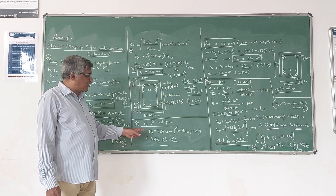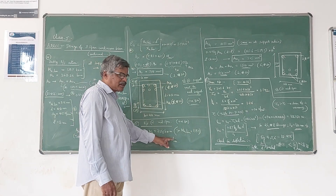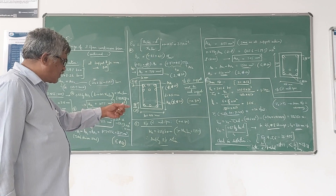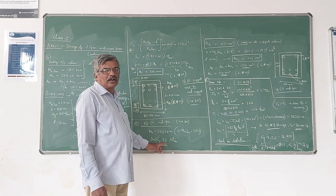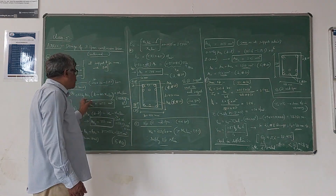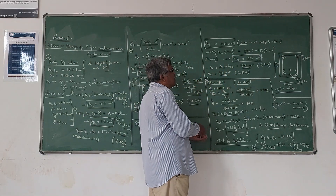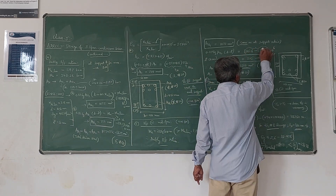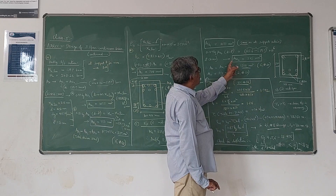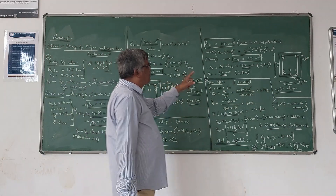Similarly, for the reinforcement at mid-span, we design for the positive bending moment of 215.6 kNm. Here also MU is greater than MU_lim (which is still 138.7 kNm), so we again go for a doubly reinforced section. AST1 remains the same as the support section since the same equation applies. But AST2 will be slightly different because the balance moment (MU − MU_lim) is different. Simplifying, AST2 = 525 mm² for the mid-span section (compared to 752 mm² at support).